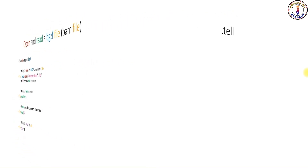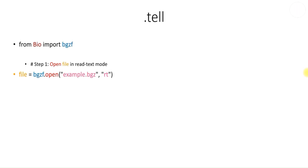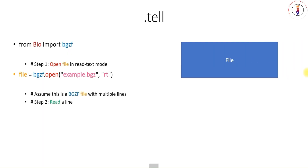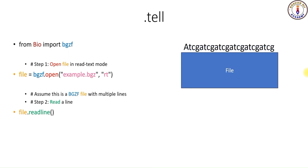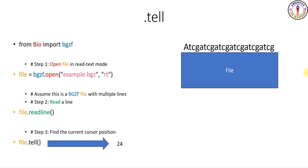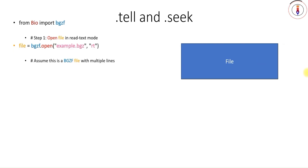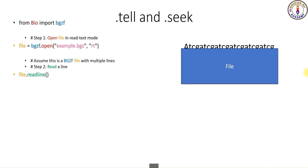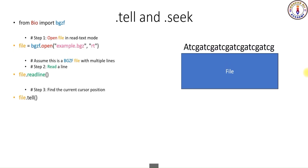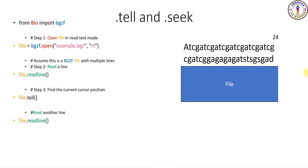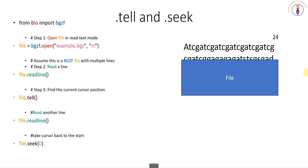Now let's look at the methods inside the open function. The tell method shows you the current position of the cursor in the file. For example, you open example.bgz, read a line using the readline command, then use the .tell method to find the cursor position — it will tell you the cursor position. The seek method brings the cursor to the start or to a specific position in the file. Suppose you opened a file, read a line, noted the cursor position using .tell, then read another line. You can then use .seek to bring the cursor back to the start of the file, and if you read a line again it will read the first line again.